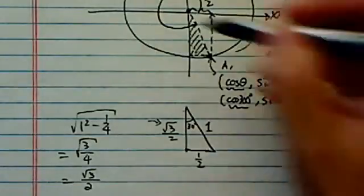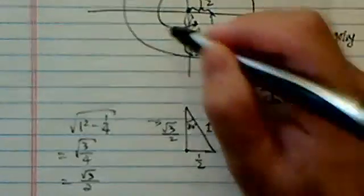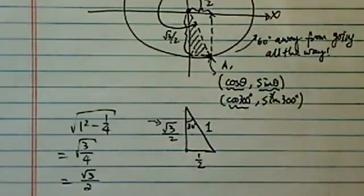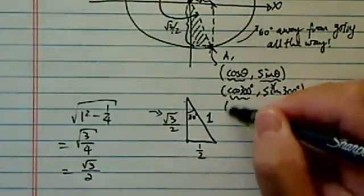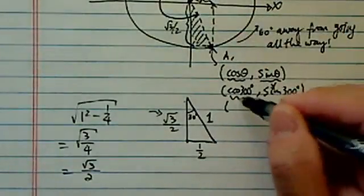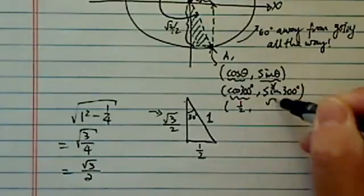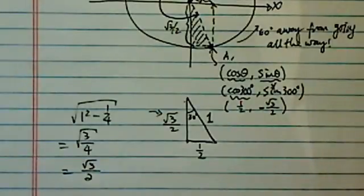So the y-value here is radical 3 over 2. So for this one, what we have then, the x-value is half, and radical 3 over 2 with a minus sign.